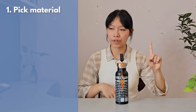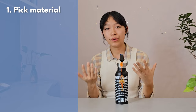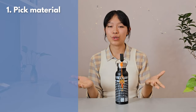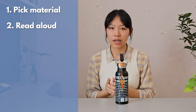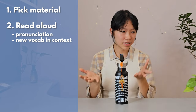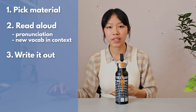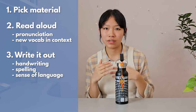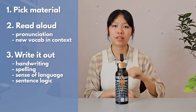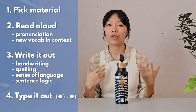Quick recap: First, choose an appropriate book — I enjoy graded readers, but you can use a favorite novel, news, or get creative with other reading material. Second, read it aloud or in your head a couple of times to practice pronunciation and decipher new words in context. Third, handwrite it out word for word — this lets you practice your handwriting, spelling, sense of the language, and sentence logic. Step four is to type it all out on your laptop to practice your touch-typing skills and review vocabulary one more time.